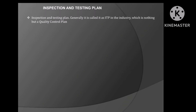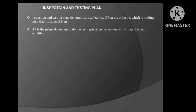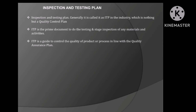Generally, the inspection and testing plan — we call it ITP — which is nothing but a quality control plan. This ITP is important to do the stage inspection for a process or product while executing any activities. It is widely used to control the stage inspection. ITP is a guide to control the quality of product or process in line with the quality assurance plan. Whatever is assured in the quality assurance plan, you can control it through the quality control plan, that is ITP.